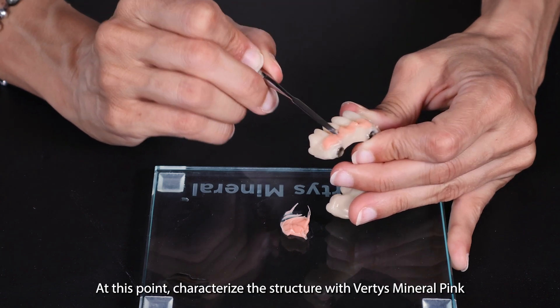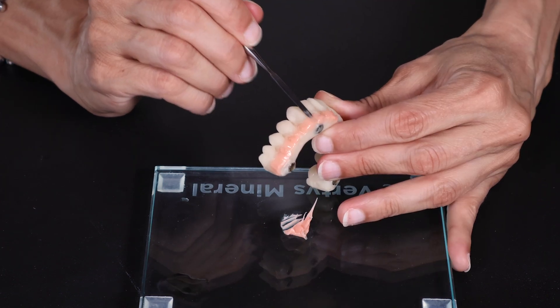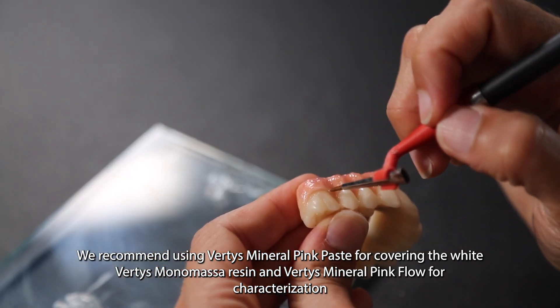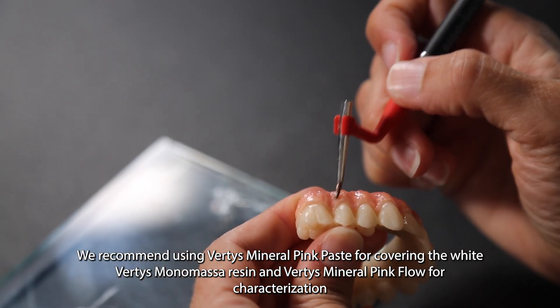At this point, characterize the structure with Vertis Mineral Pink. We recommend using Vertis Mineral Pink Paste for covering the white Vertis Monomassor resin, and Vertis Mineral Pink Flow for characterization.